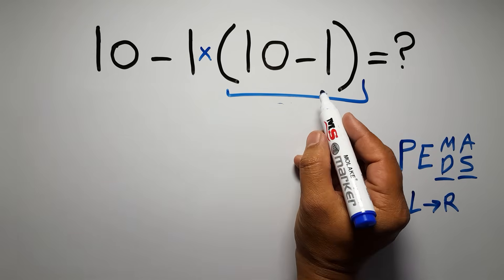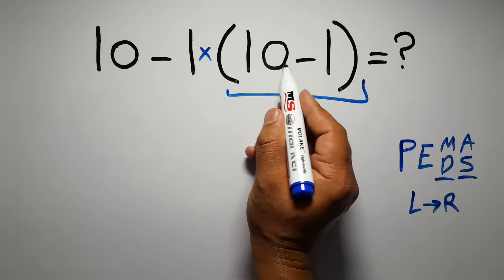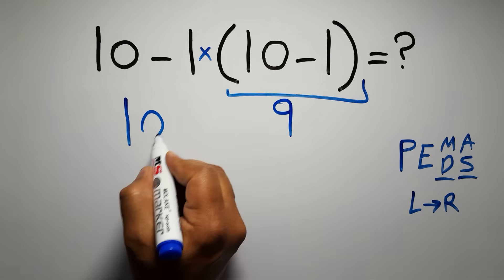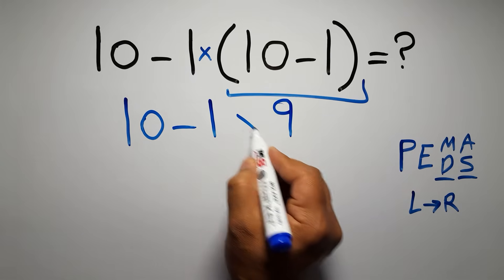So, first these parentheses. Inside these parentheses, we have 10 minus 1, which equals 9. So, 10 minus 1 times 9.